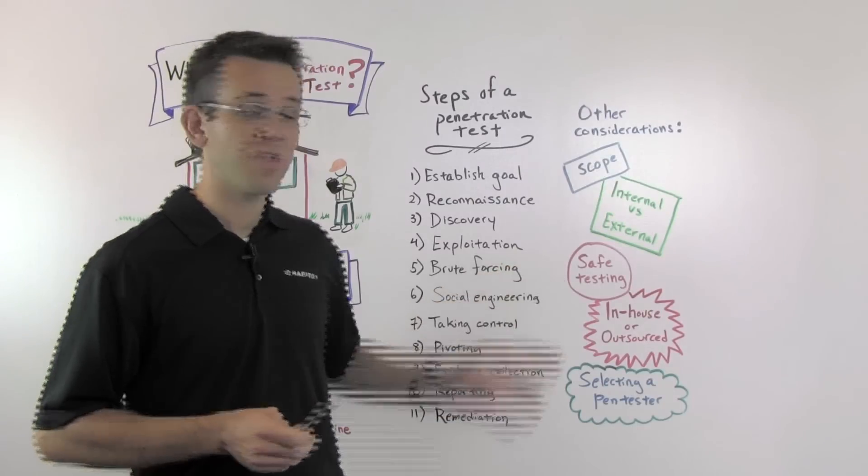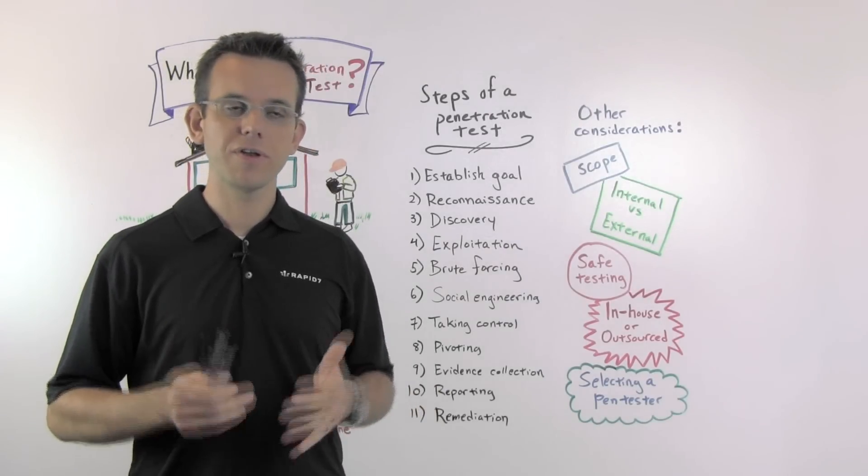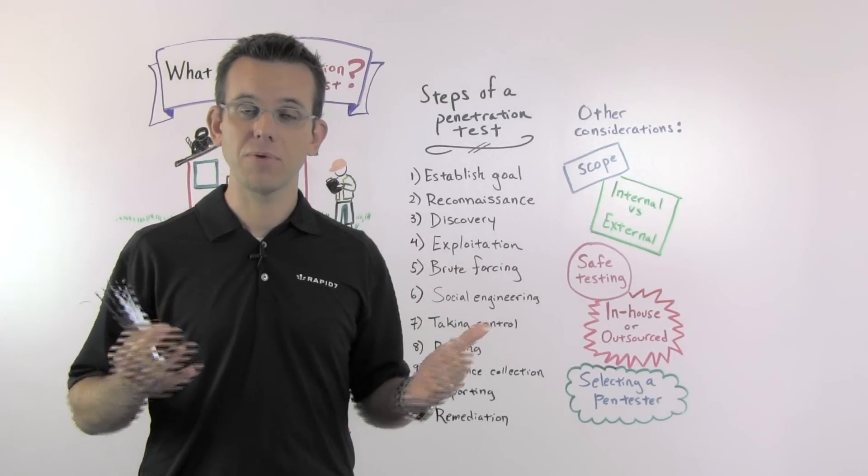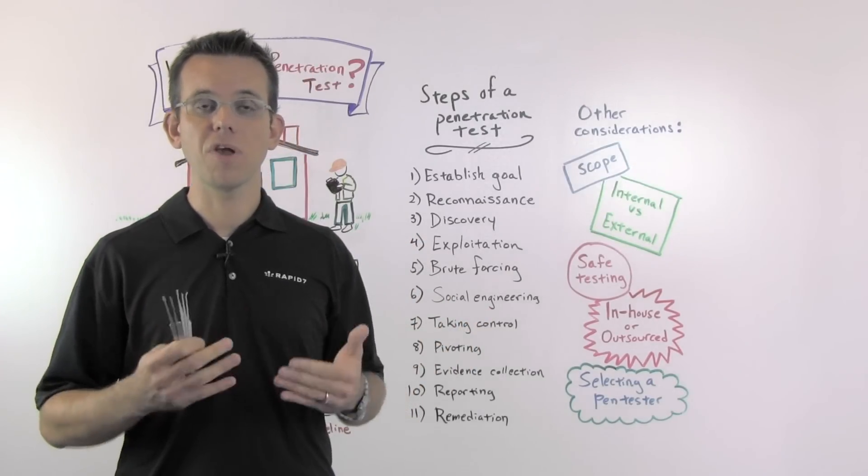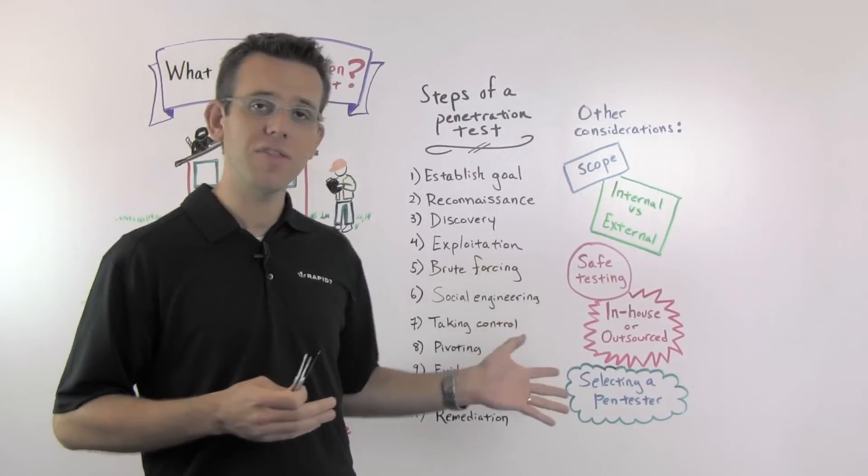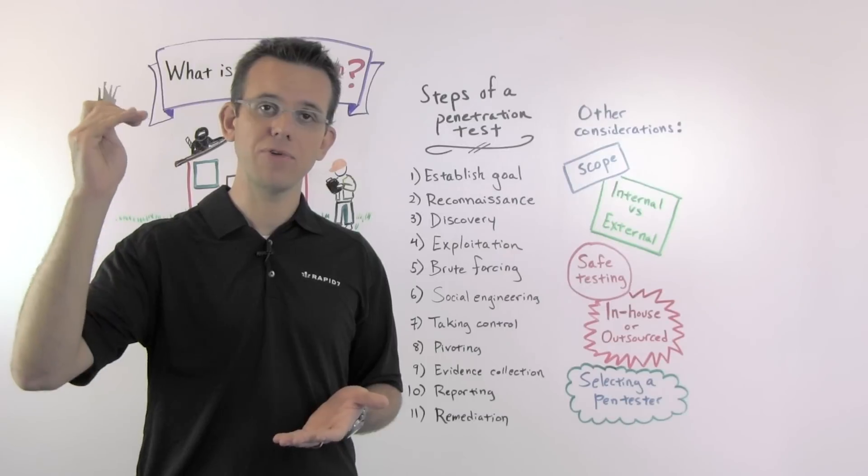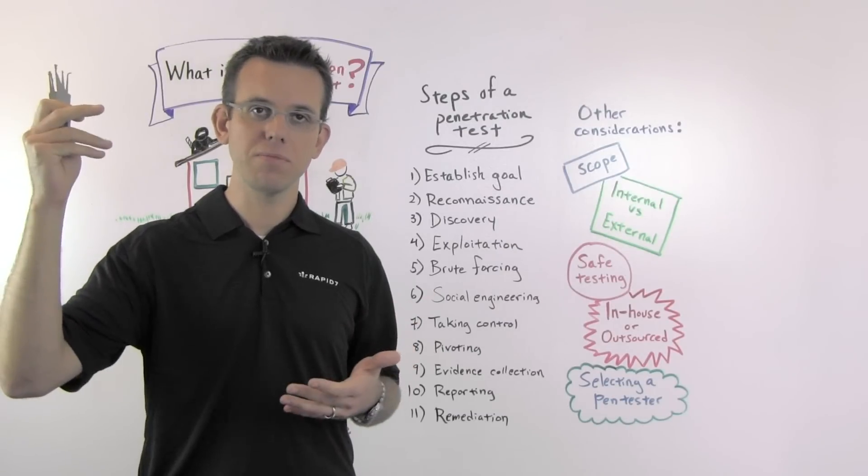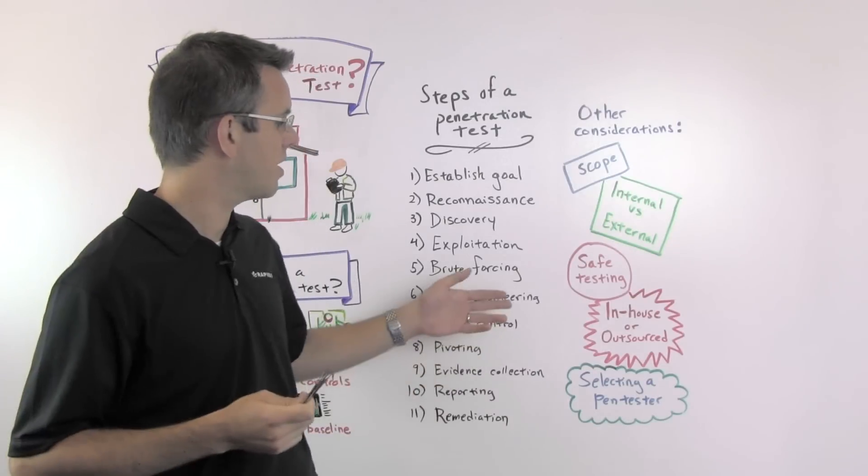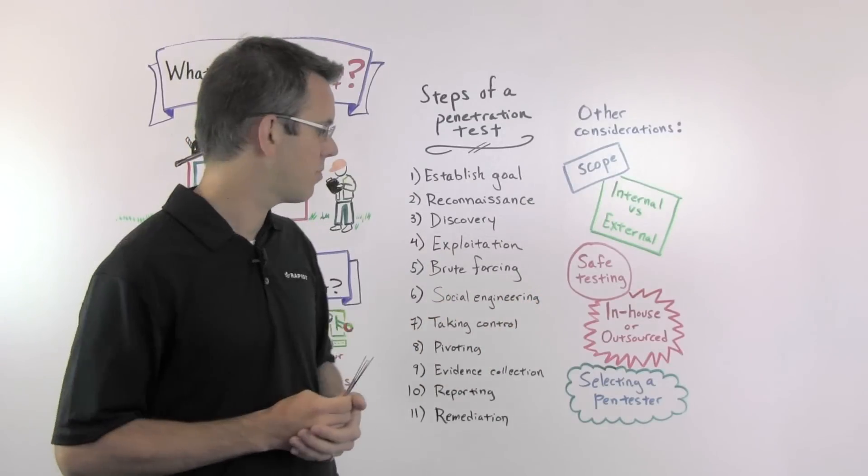Then, of course, you want to test safely. So here, you really should plan out your steps very carefully, especially when you're testing in production networks. You want to make sure that you use only reliable exploits. And tools like Metasploit allow you to do that by ranking the exploits. For example, exploits are ranked by reliability. Only excellent and great reliability should be used in production environments. And so that really helps you to not affect production.